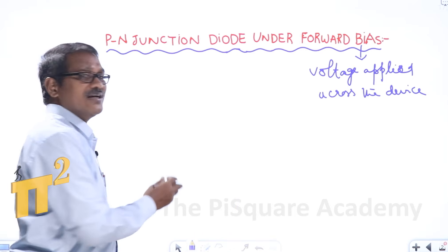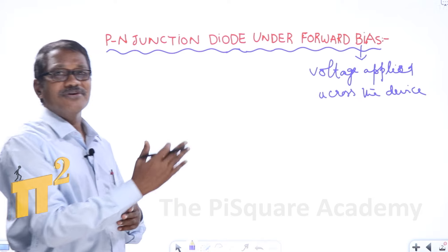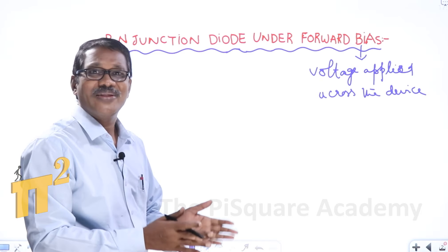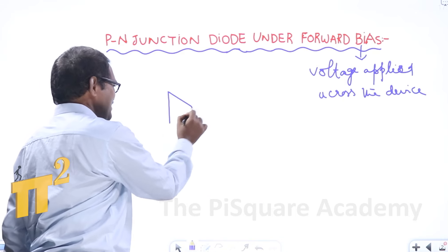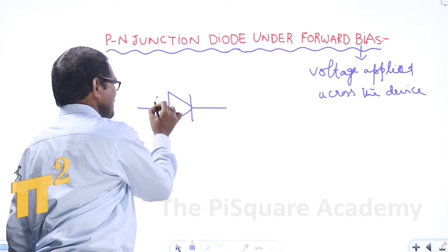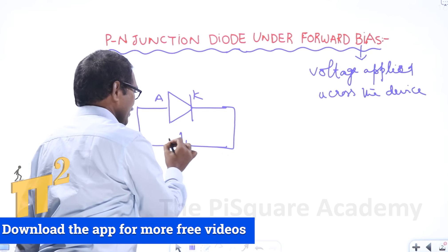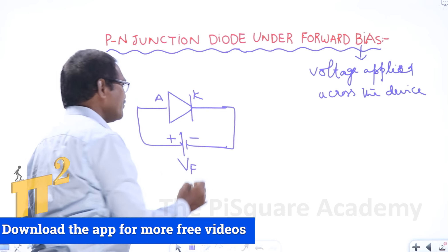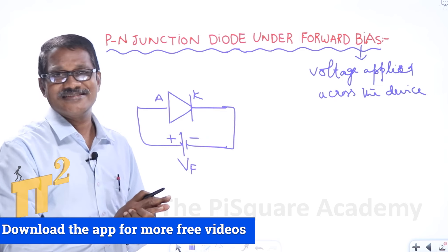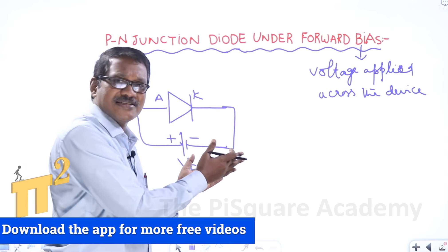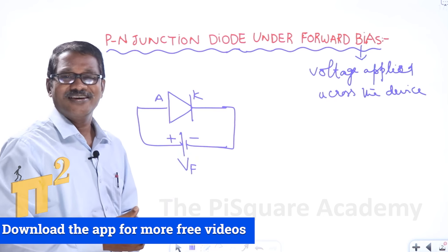Forward biased conditions means if we connect the positive terminal of the external battery to the anode and the negative terminal of the battery to the cathode terminal, then the diode is said to be under forward biased conditions. If we connect practically like this, then what is going on behind the screen must be observed and experimented.